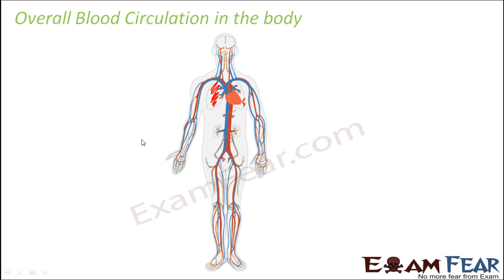The red color wherever you see represents the oxygenated blood. From different parts of the body, the deoxygenated blood comes in and enters the heart through the right auricle. The right auricle sends it to the right ventricle, and from the right ventricle it goes back to the lungs. The lungs remove the carbon dioxide, expel it through the nostril, take in oxygen, and make the blood oxygenated again — and this process keeps on continuing.